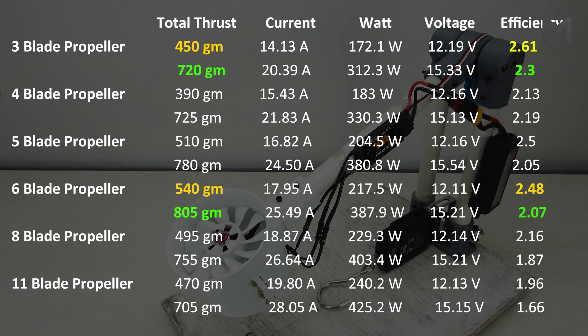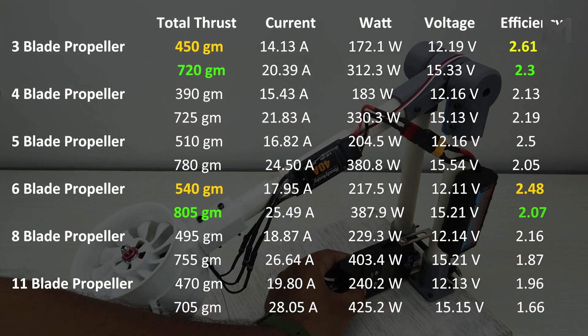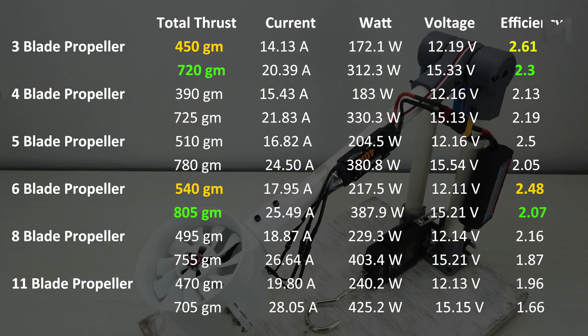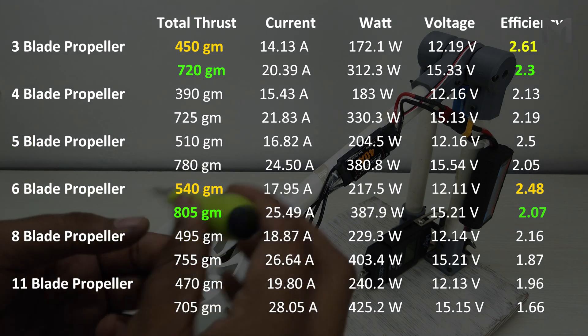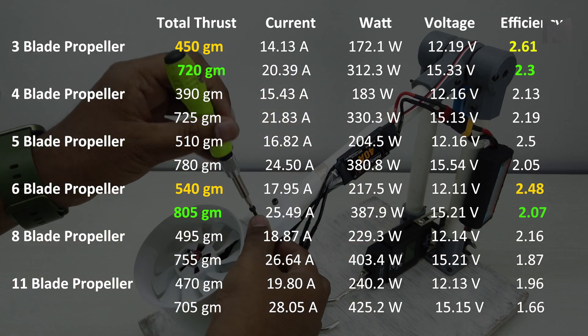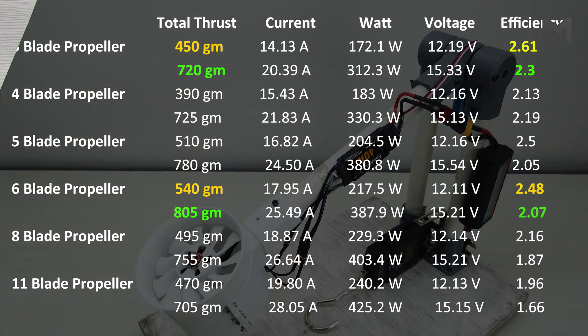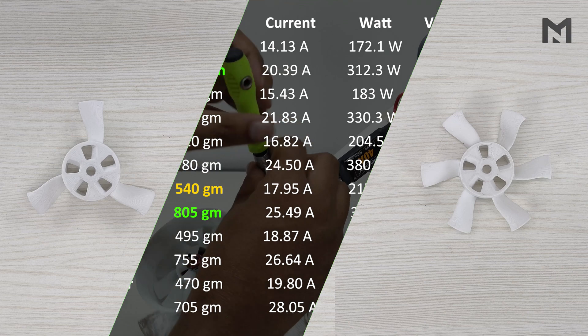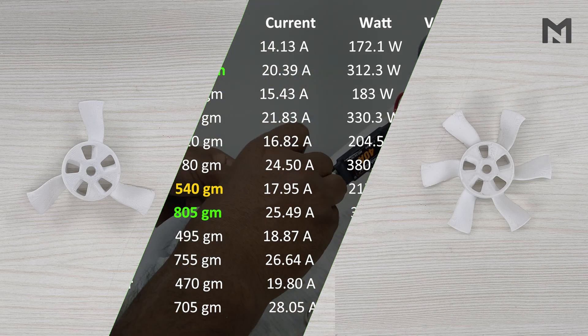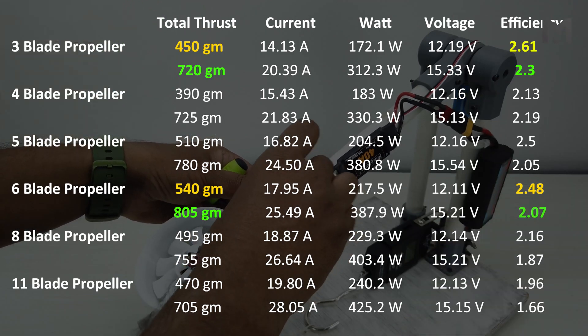Now talking about the 4S battery, the 3 bladed propeller again proves to be highly efficient. It produced 720 grams of thrust at an efficiency of 2.3. Thus we can say that the 3 bladed and 6 bladed propellers are recommended for our design as they are efficient as well as produce the maximum thrust. We can eliminate the other designs.